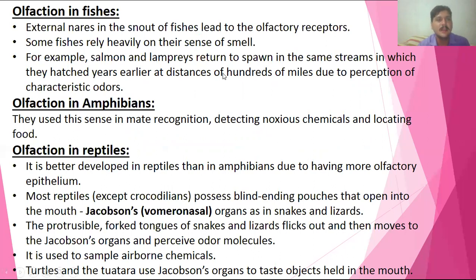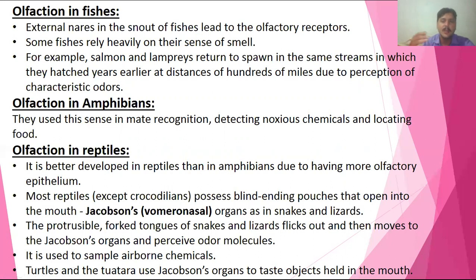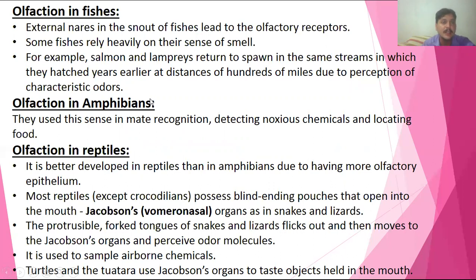In different vertebrates, such as fishes, olfactory receptors are found in external nasal layers. Salmon and lampreys are diadromous fishes — they survive in two different environmental conditions, freshwater and marine water. After spawning, they return to the same stream where they were born. This is guided by olfaction: pheromone chemicals released in the water help them navigate back to the same direction.